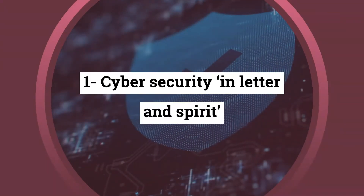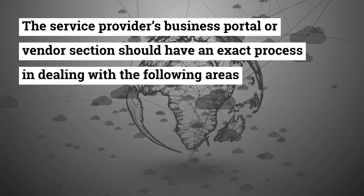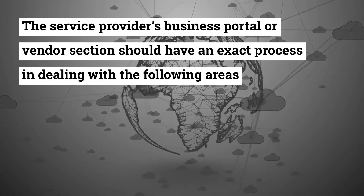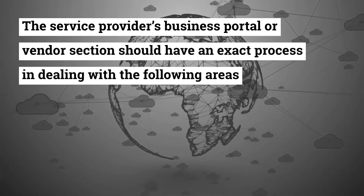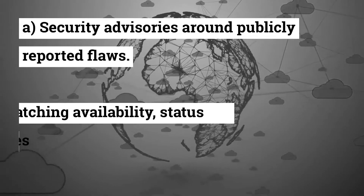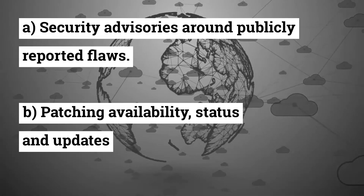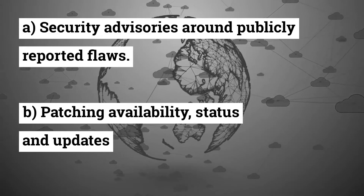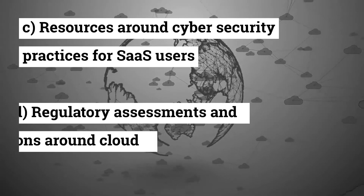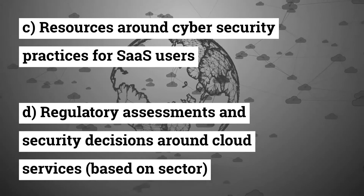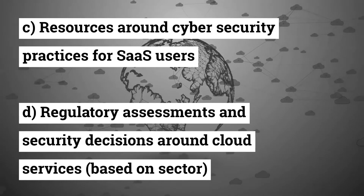1. Cybersecurity. The service provider's business portal or vendor section should have an exact process in dealing with the following areas: a. Security advisories around publicly reported flaws. b. Patching availability, status and updates. c. Resources around cybersecurity practices for SaaS users. d. Regulatory assessments and security decisions around cloud services, based on sector.